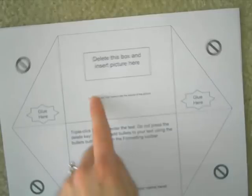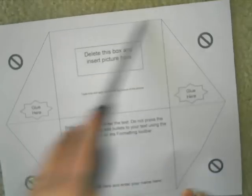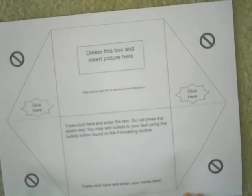Basically how you assemble it is you just print it out. When you print it out, the template itself gives you direction — you would have deleted this box and inserted the image, you would have triple-clicked here and started typing. Here is a little area to cite the source of where the picture is from. Then you would go with a pair of scissors and cut along the solid line on the outer part.